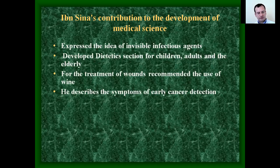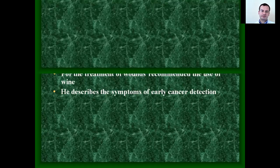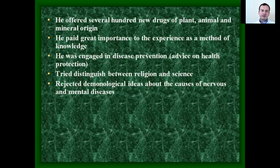Avicenna's contribution to the development of medical science included: expressing the idea of invisible infectious agents, developing dietary sections for children, adults, and the elderly, recommending the use of wine for the treatment of wounds, and describing the symptoms of early cancer. He offered several hundred new drugs of plant, animal, and mineral origin. He paid great importance to experience as a method of knowledge. He was engaged in disease classification and tried to distinguish between religion and science, rejecting demonological ideas about the causes of disease.